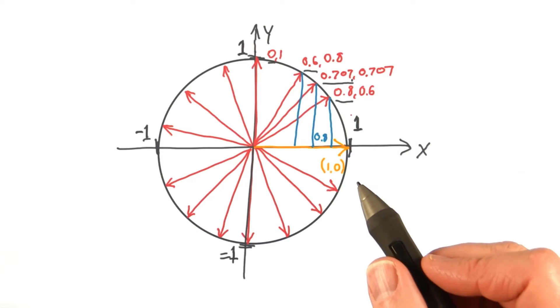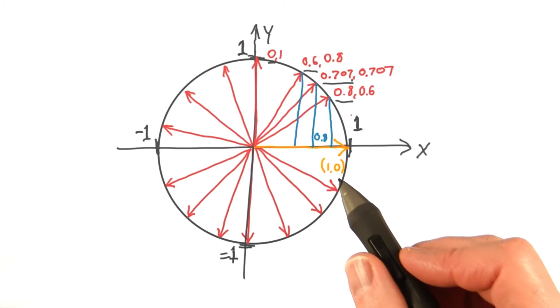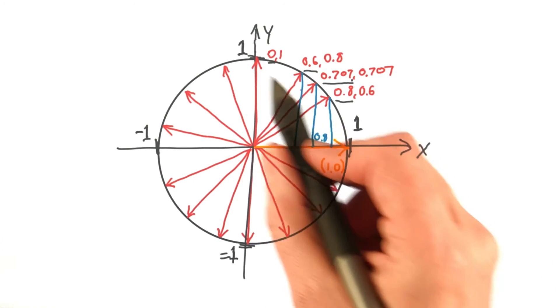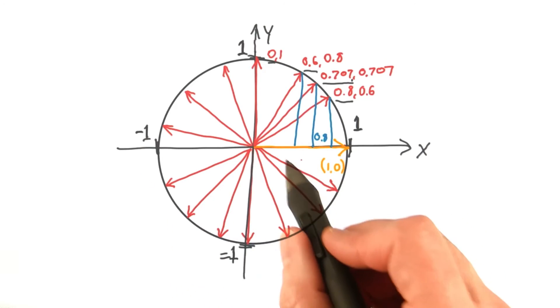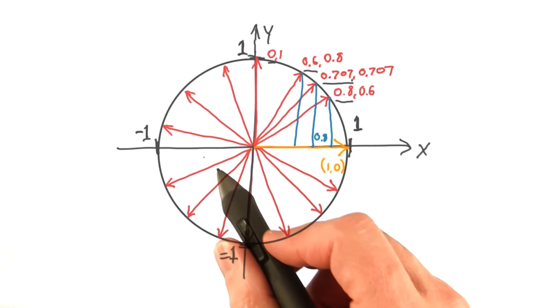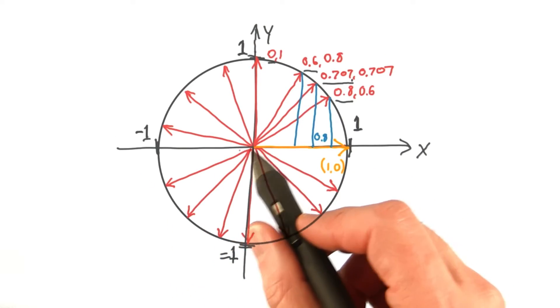As you may recall from geometry, the cosine is often defined as the distance in x of a point on this circle. So as this vector angle increases, the cosine of this angle is computed by taking the dot product.